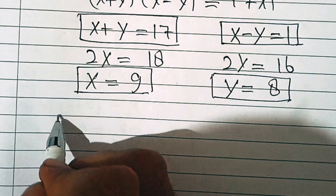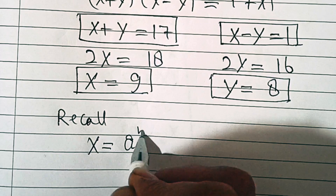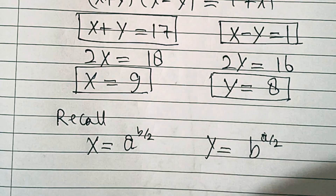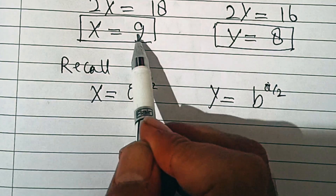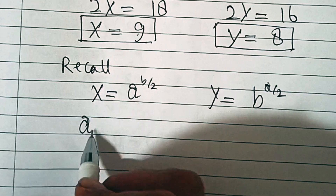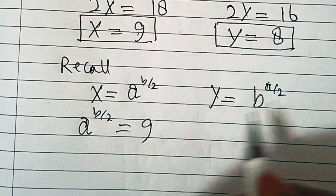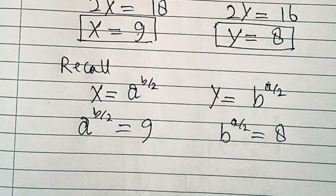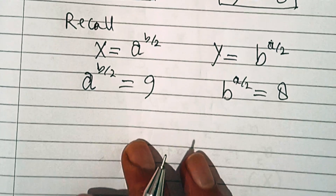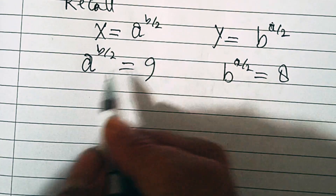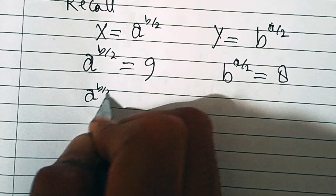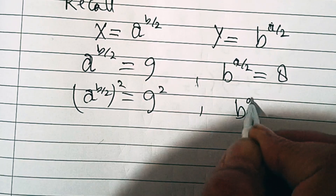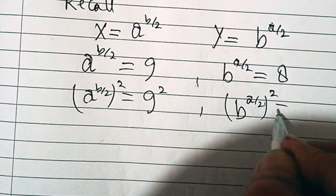Now recall that we put x equal to a^(b/2) and y equal to b^(a/2). So these give us a^(b/2) equal to 9 and b^(a/2) equal to 8. In the next step, squaring both sides: (a^(b/2))² equals 9², and (b^(a/2))² equals 8².